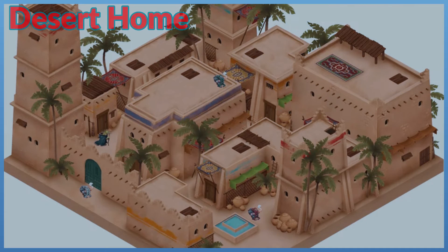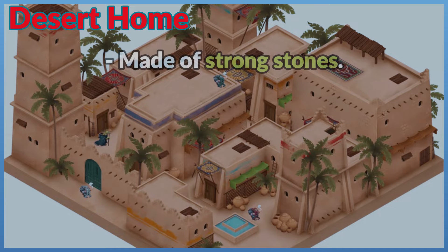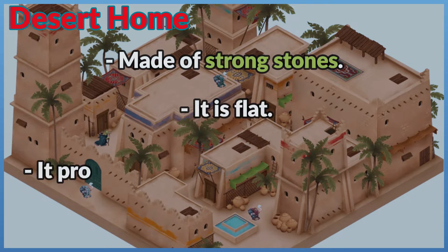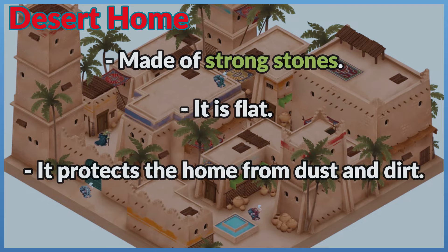Desert Home — Material of the roof: made of strong stones. Properties of roof material: it is flat, and it protects the home from dust and dirt.